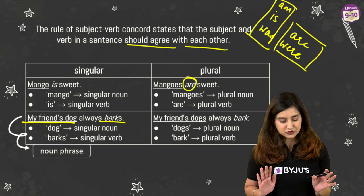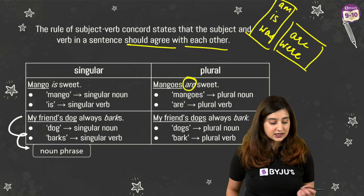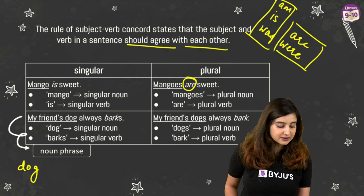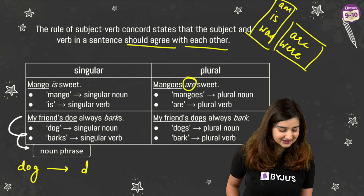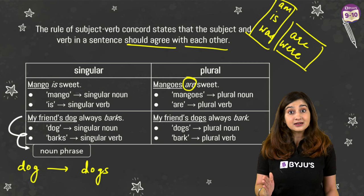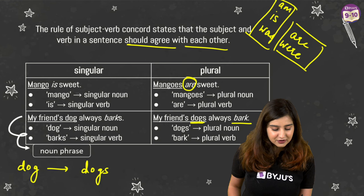If we want to make this noun phrase plural, since the noun we are considering is 'dog,' we pluralise 'dogs,' not 'friends.' So it becomes 'my friends' dogs.' Now dogs is plural, so we must also make the verb plural: 'bark.' Simple.